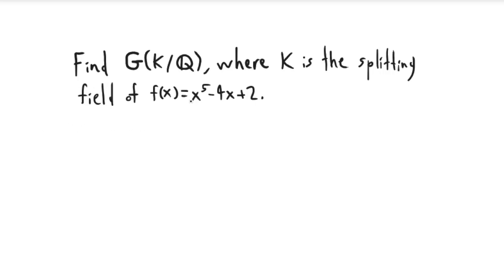The first thing that we want to notice about this polynomial is that it is irreducible by Eisenstein's criterion. Eisenstein's criterion tells us that if we have any polynomial like this, if there is a prime p so that p doesn't divide the leading coefficient of the polynomial, and then if p does divide all of the other coefficients of the polynomial, then if p squared fails to divide the constant term, then the polynomial is irreducible.